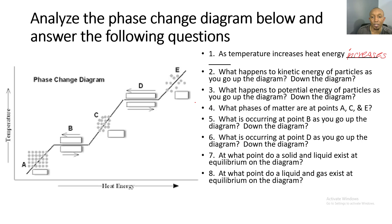Number two: what happens to the kinetic energy of particles as you go up the diagram? Kinetic energy means particles are in motion, so as we go up, particle motion increases because temperature is increasing. And as we go down the diagram, the particles condense and come closer together, so kinetic energy decreases as we go down the phase change diagram.